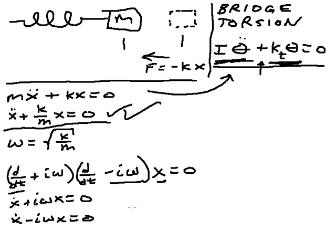That's why we can make two first-order equations. Now, you know the solutions to these first-order equations. For the first one, x equals any constant times e to the negative i omega t.